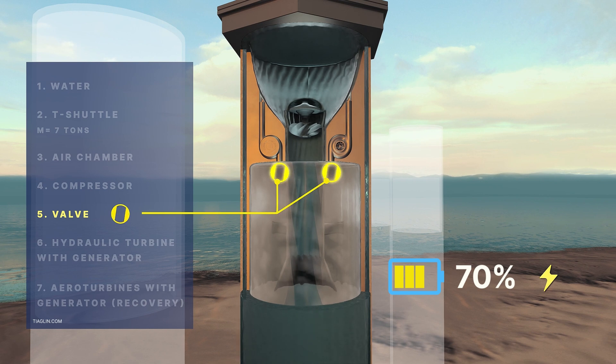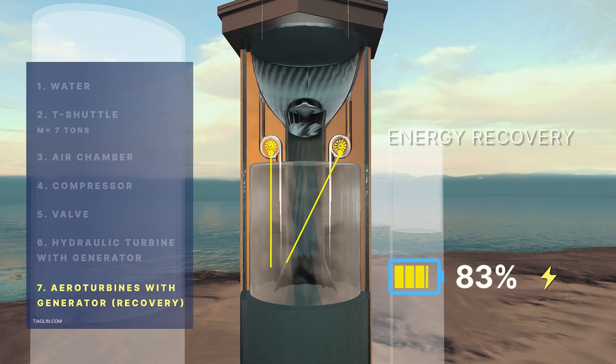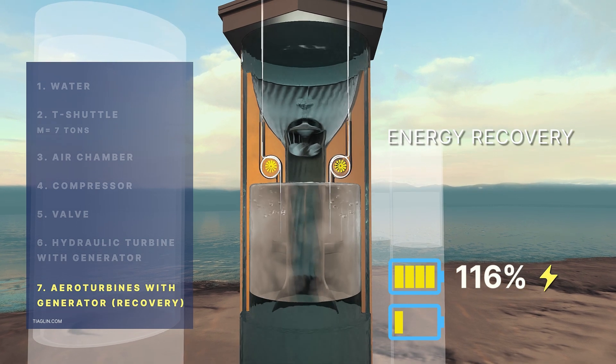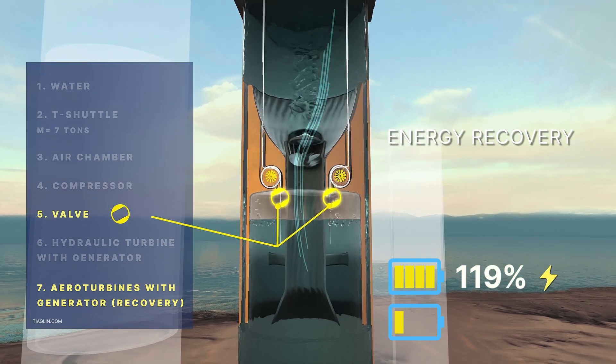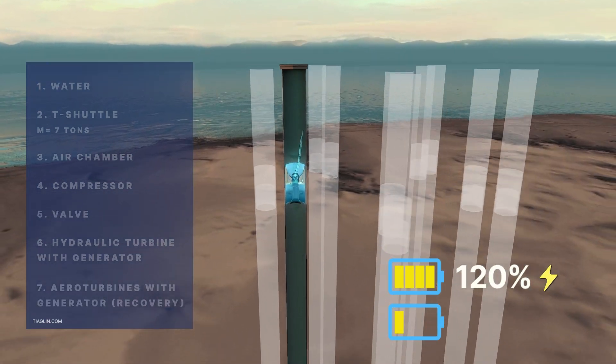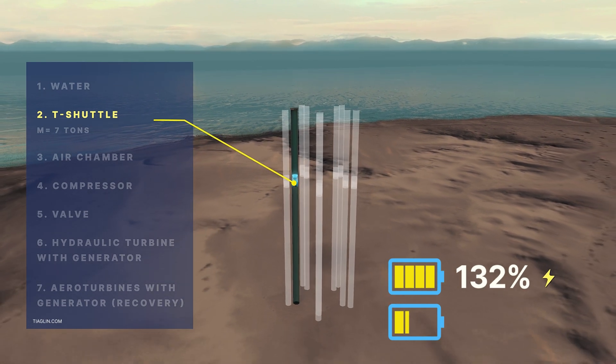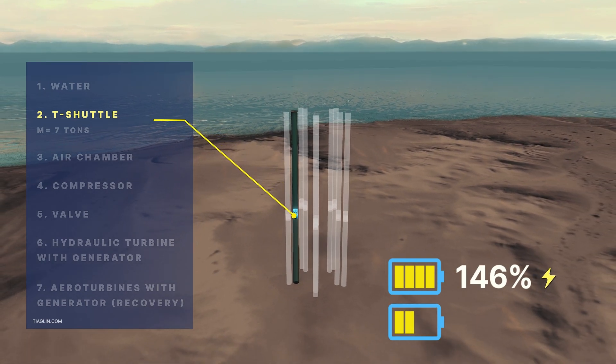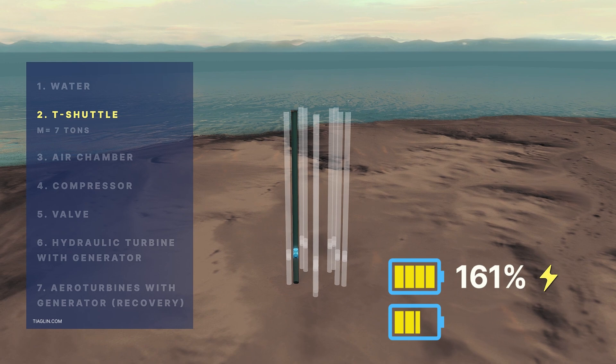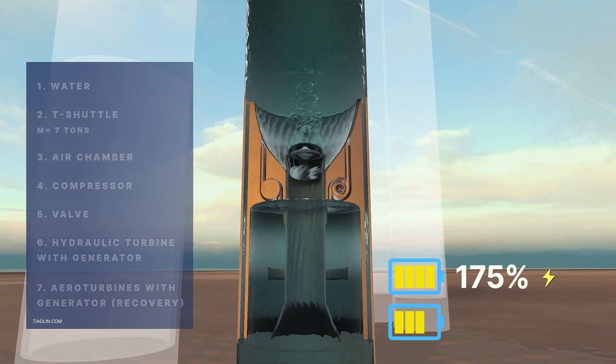In turn, this causes the generator to produce electricity, which is transmitted to the consumer. When the platform reaches the upper position, the valves open for releasing air. The air, passing through the channel, falls on the blades of an additional turbine and rotates it, which in turn causes the generator to generate electricity.